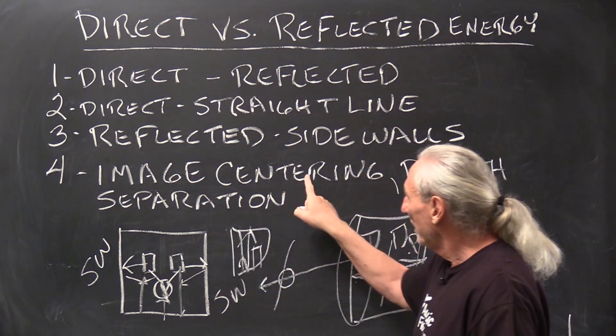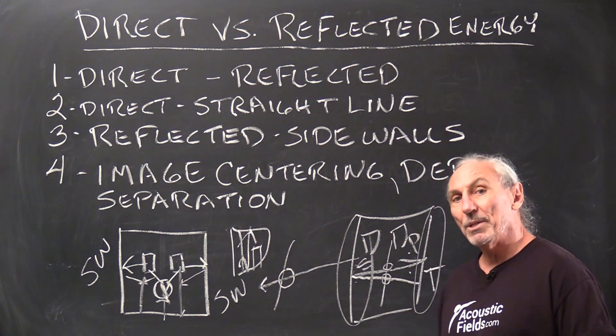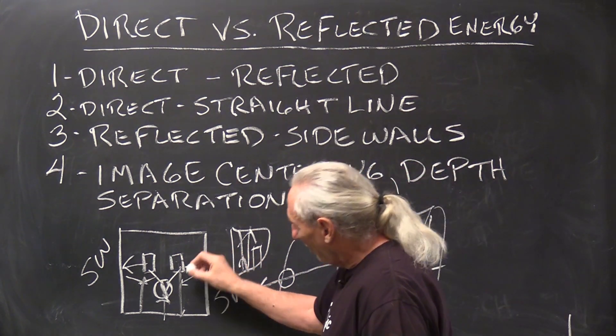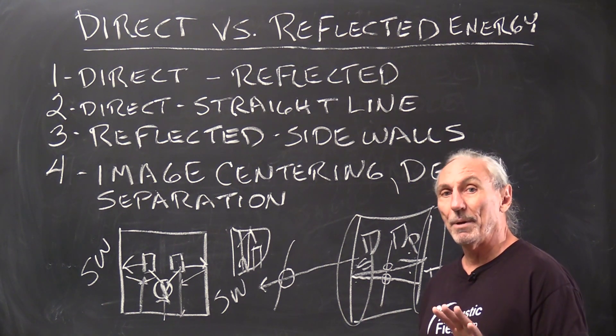But the side wall reflections are the most critical because they're for image, centering, depth of soundstage, separation between middle and high frequencies and low frequencies. So these side wall reflections must be managed correctly with either diffusion or absorption depending on usage.